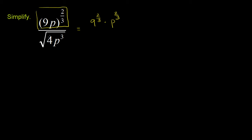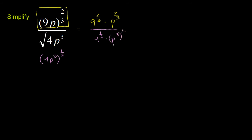Now the bottom part — we can rewrite the square root of 4p to the 3rd. This is the exact same thing as 4p to the 3rd to the 1/2 power. The square root of 4p to the 3rd is the same thing as 4p to the 3rd to the 1/2 power. Given that, we can do the same thing we did on the numerator: this is the same thing as 4 to the 1/2 times p to the 3rd to the 1/2 power.